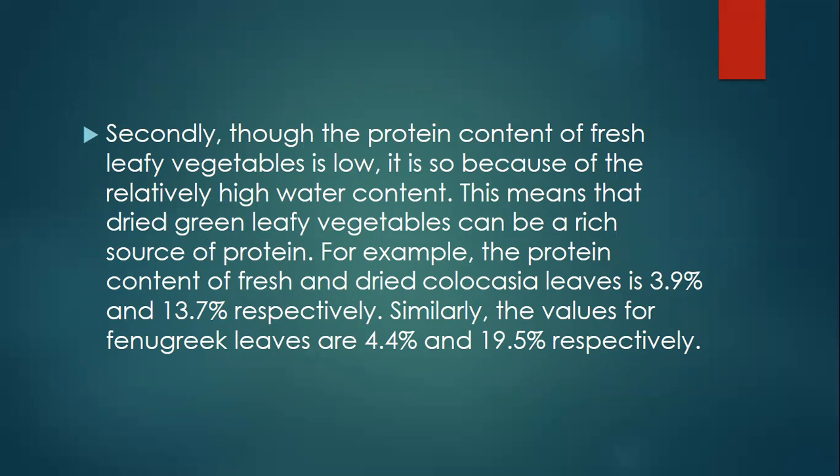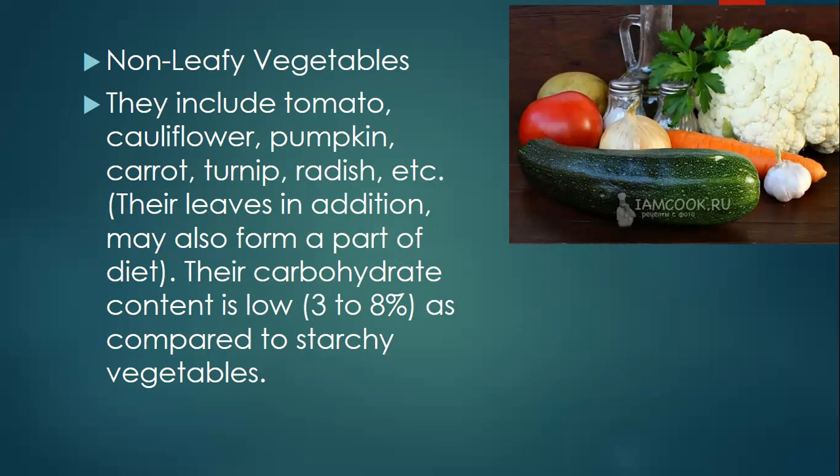Similarly, the values for fenugreek leaves are 4.4% and 49.5% respectively. Non-leafy vegetables include tomato, cauliflower, pumpkin, carrot, turnip, and radish. Their leaves may also form a part of diet. Their carbohydrate content is low, from 3 to 8%, as compared to starchy vegetables.